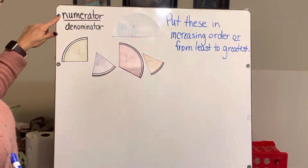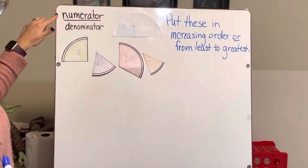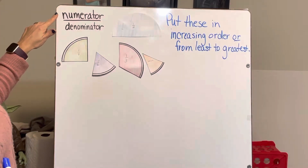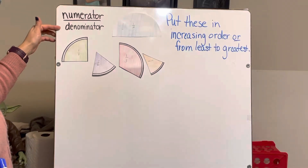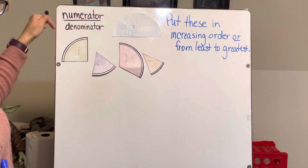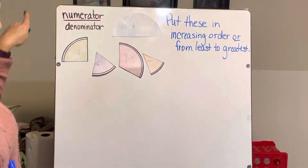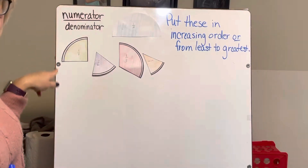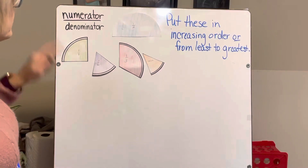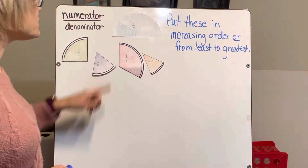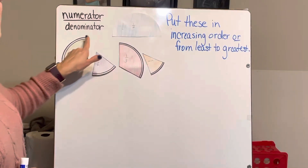Let's do a quick review. The numerator is the number at the top — it's the number of pieces used or taken. The denominator is the number at the bottom, and it represents the total number of pieces in the whole thing.